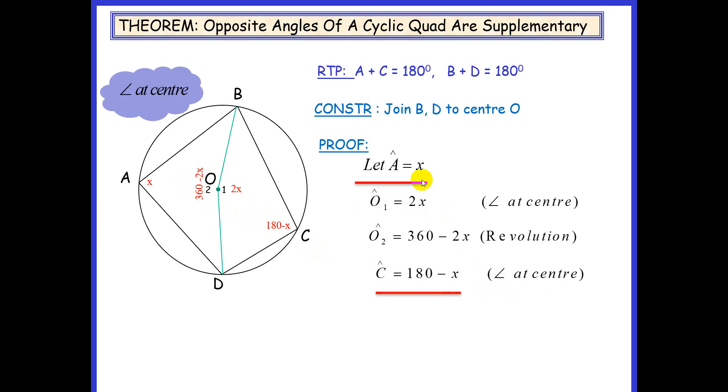Now we know that angle A was x and angle C is 180 minus x. If we add A plus C, we get 180 degrees, which proves that the opposite angles of a cyclic quad are supplementary.